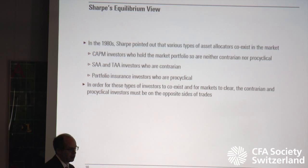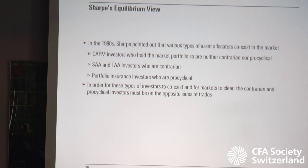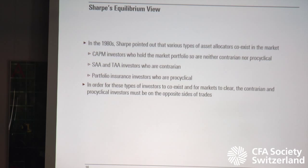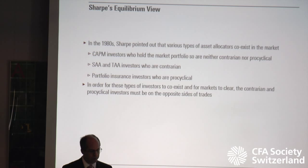Writing back in the 80s, Bill Sharpe made an interesting observation: you really have three different types of investors coexisting in the same market — neutral investors following the CAPM prescription, tactical and strategic investors investing in a contrarian fashion, and portfolio insurance investors who are pro-cyclical. In order for these types to coexist and for markets to clear, the contrarian and pro-cyclical investors must be on opposite sides of every trade, since the assets are all held at the end of the day.